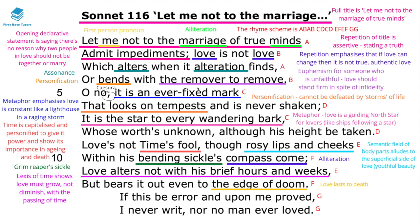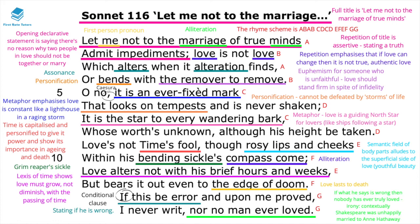Love 'bears it out even to the edge of doom' — love must last till death, otherwise it's not authentic. The conditional clause 'if this be error and upon me proved' is the speaker's way of saying if he is wrong in his assumptions about love, then no man ever truly loved. This is ironic given that Shakespeare himself was famously known to be unhappily married to his wife Anne Hathaway — he makes a vast universal statement about true love while being unhappily married himself.